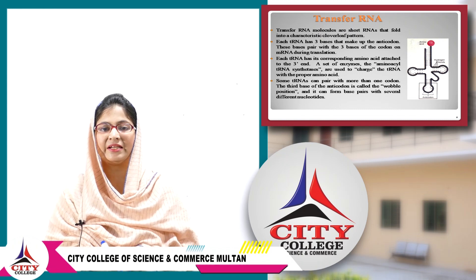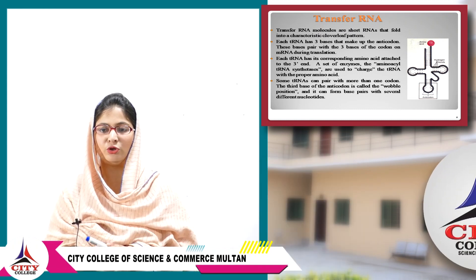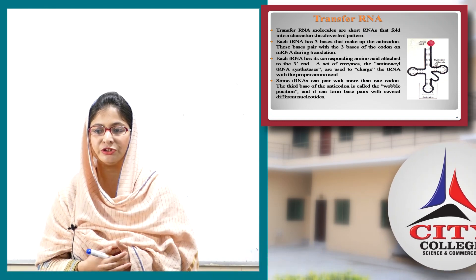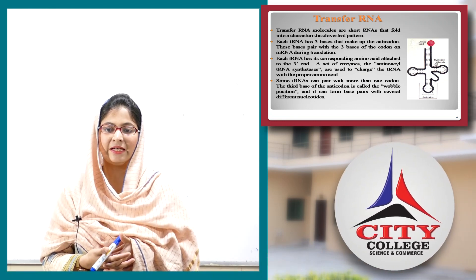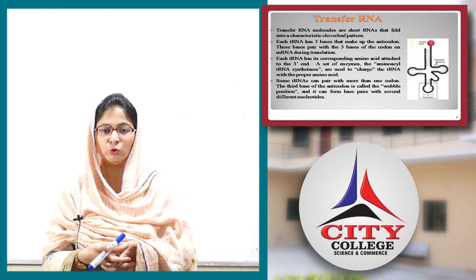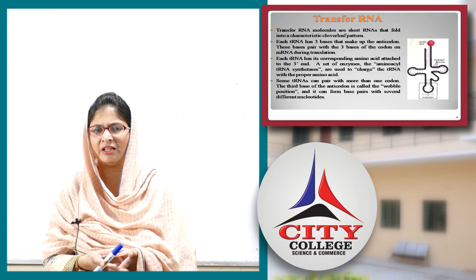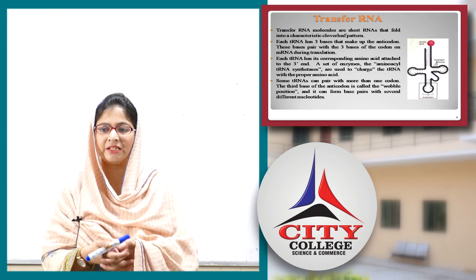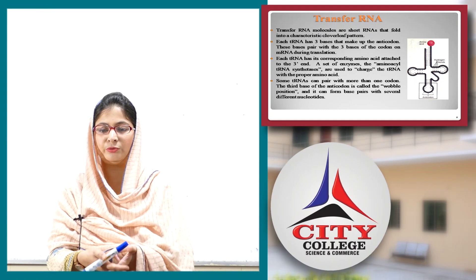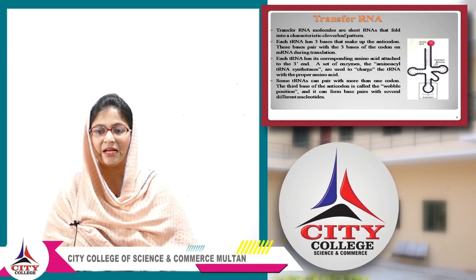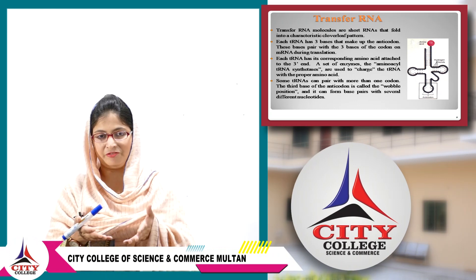Some tRNAs can pair with more than one codon. The third base of the anticodon is called the wobble position. At this third position, different bases such as A, U, C, or G can pair with several different nucleotides.